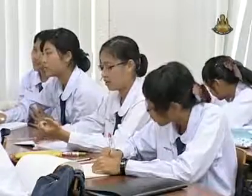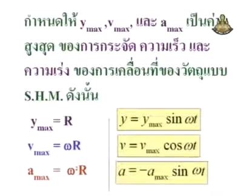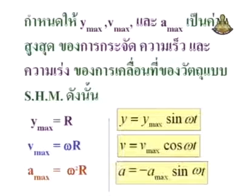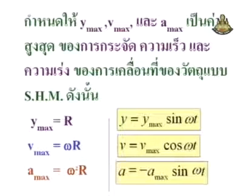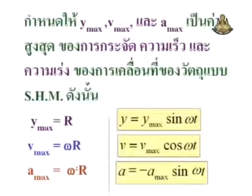For A-max — the acceleration — we can find it from A-max, which equals omega squared times R. With omega expressed as cosine. Let's now review the oscillation of the pendulum.